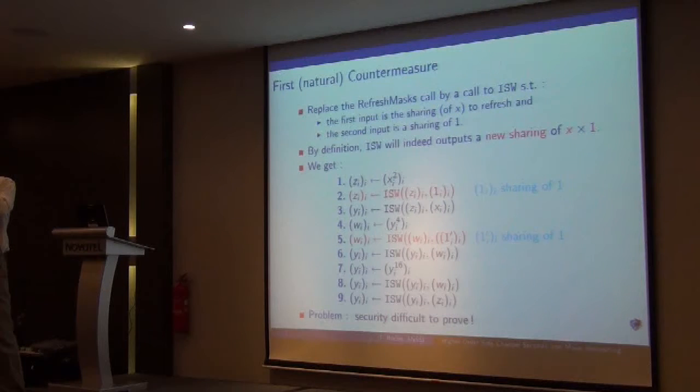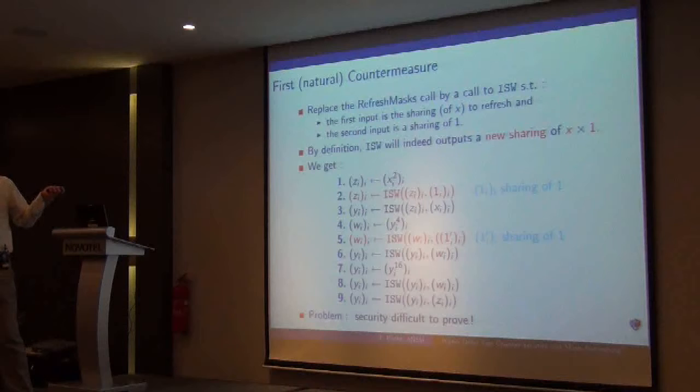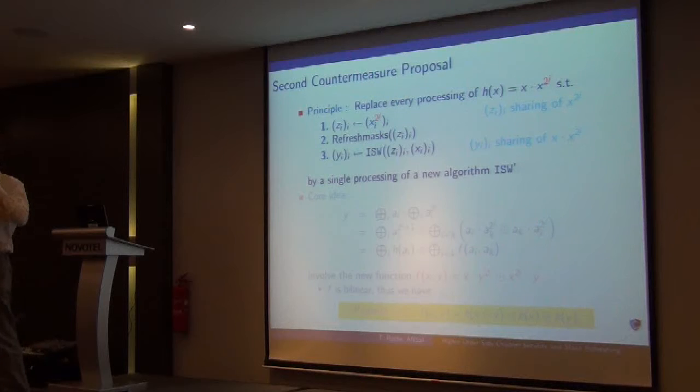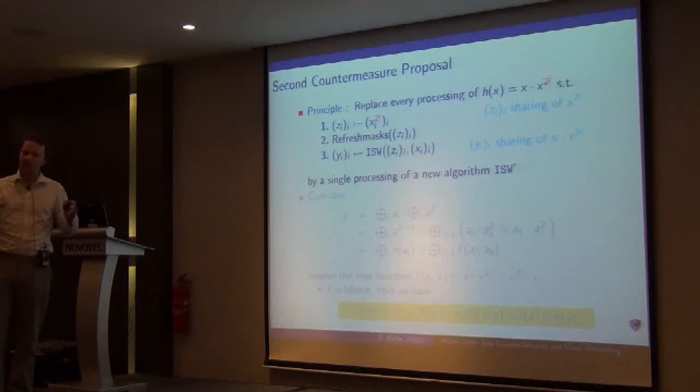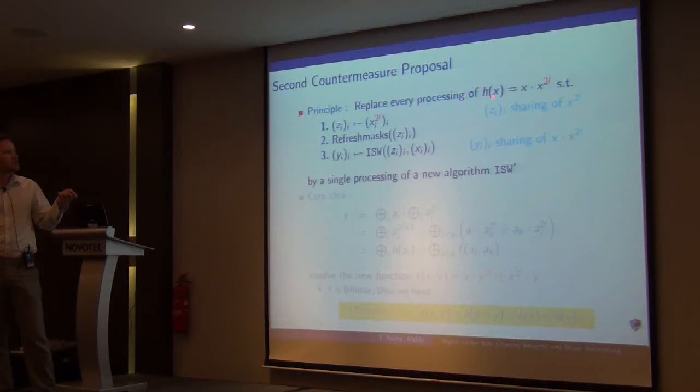How can we overcome this issue? One way would be to use a much more complicated refresh-mask. We believe that this would hold higher security and avoid this problem of higher order attack. However, it's pretty hard to prove, and also it's very expensive because we add this expensive secure multiplication here. So we went another way. Instead of replacing the refresh-mask, we will actually gather, take together the three operations here and make one simple operation, which is actually this function h, that is the product of x by x to the power 2 to the j.